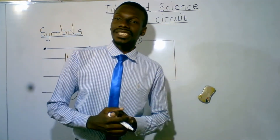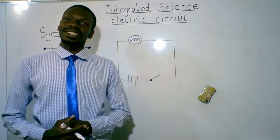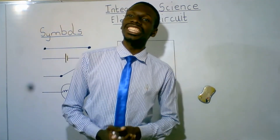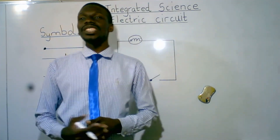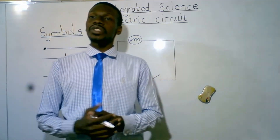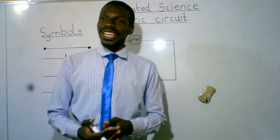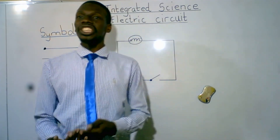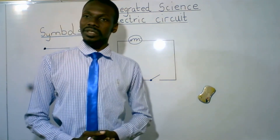What is electricity? It is simply the form of energy that can be converted into other forms of useful energy. A circuit is a path in which current flows.